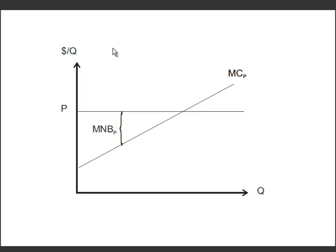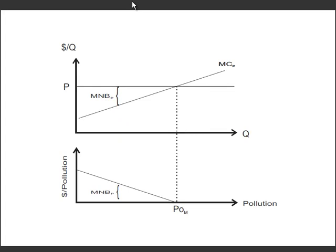Now since we want to talk about pollution, we're going to switch the graph. Here we've got the graph that we just looked at on top, and then below it we're going to assume that for every unit of the good Q, there's a unit of pollution that's produced. So since the firm is getting marginal net benefits from the production of the good, it's implicitly also getting marginal net benefits from the production of pollution. And so the optimal level of pollution for this firm is going to be POM.